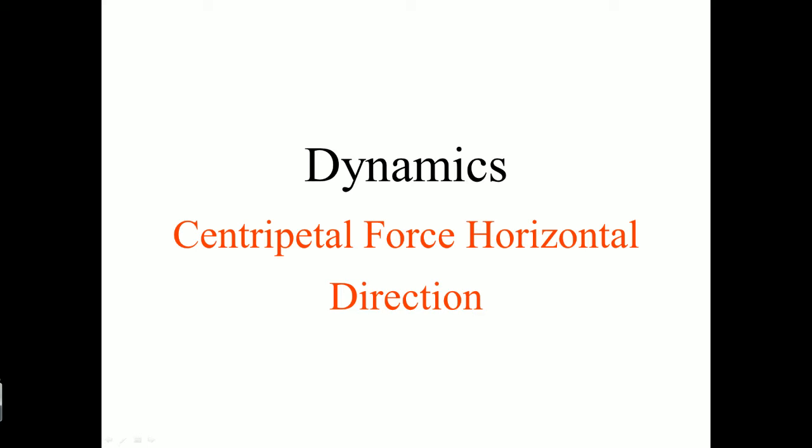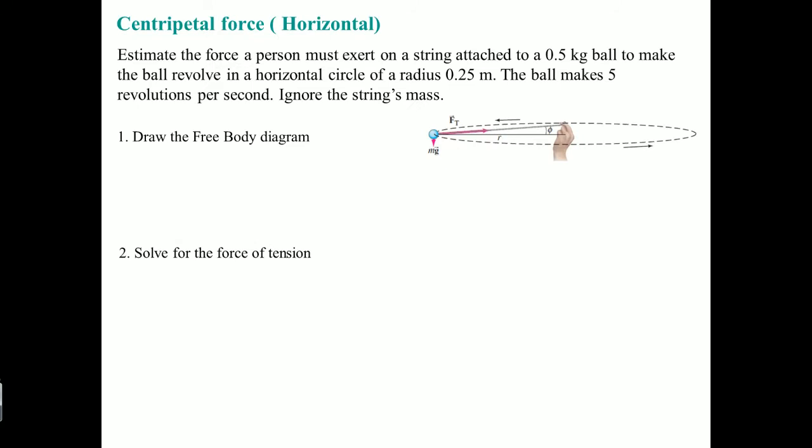Welcome to the AP Physics video lecture. This is going to cover the centripetal force in the horizontal direction. This is a classic example of a problem you're going to see: estimate the force a person must exert on a string attached to a 0.5 kilogram ball to make the ball revolve in a horizontal circle of radius 0.25 meters. The ball makes five revolutions per second. Ignore the string's mass.